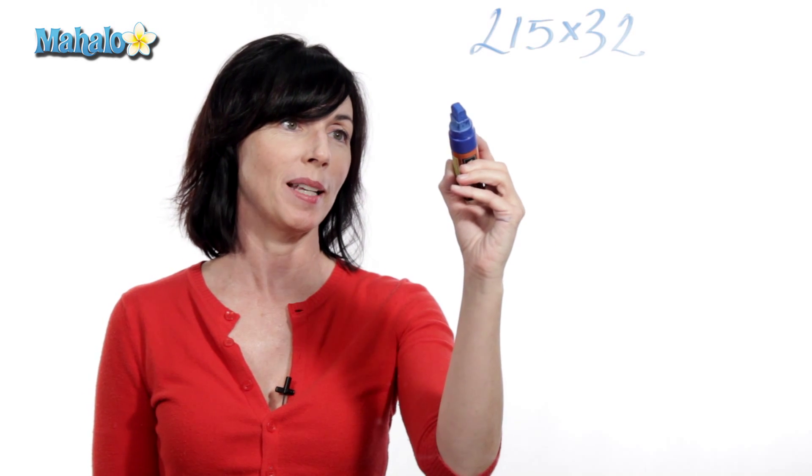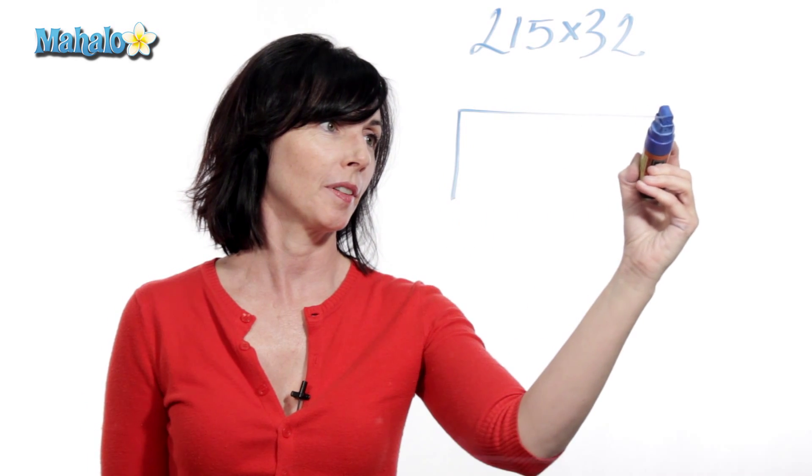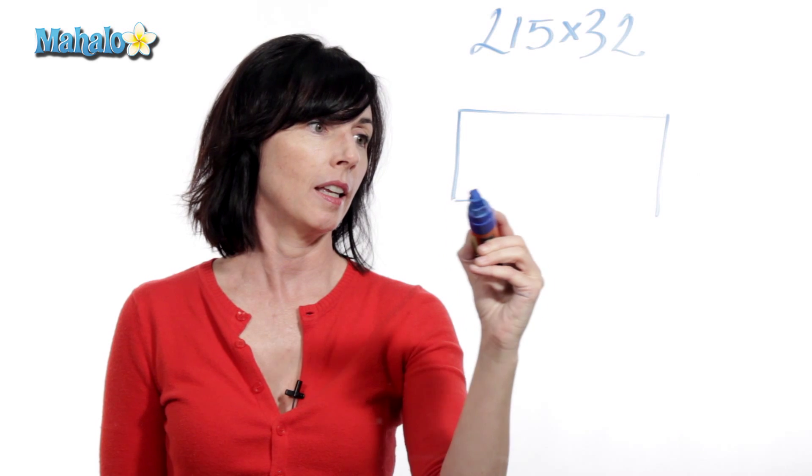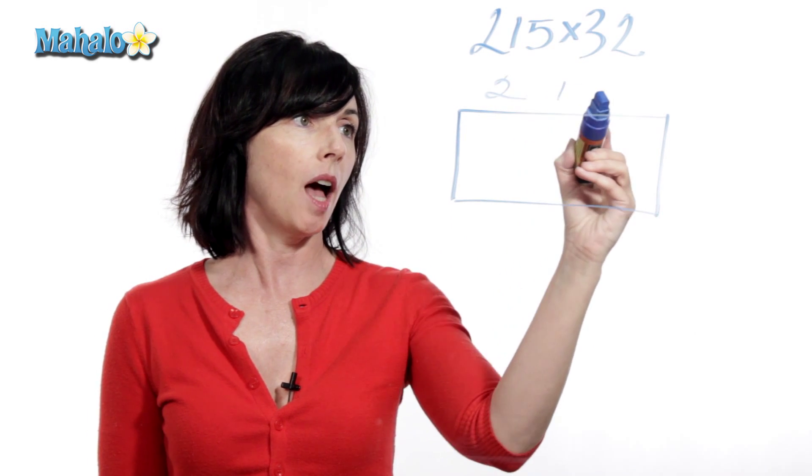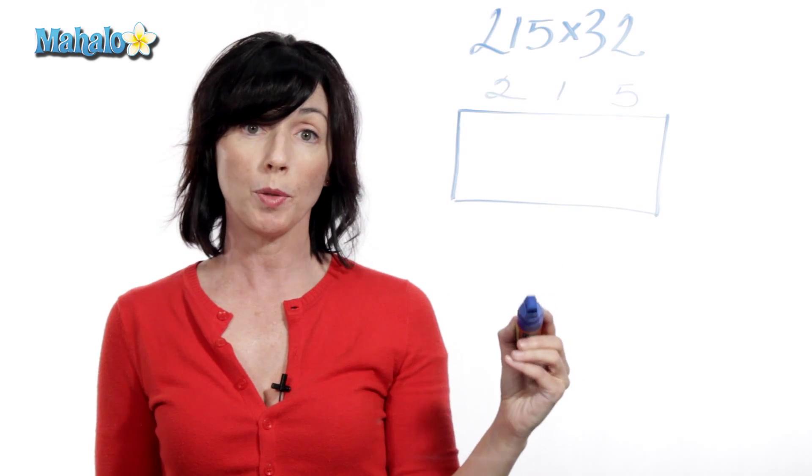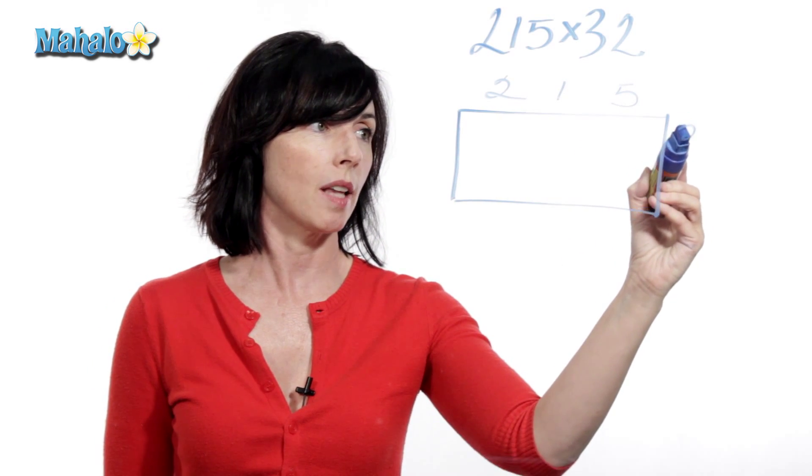So what I'm going to do is I'm going to draw a box basically. And I'm going to put my 215 at the top here. And then I'm going to put my 32 down the side, like that.